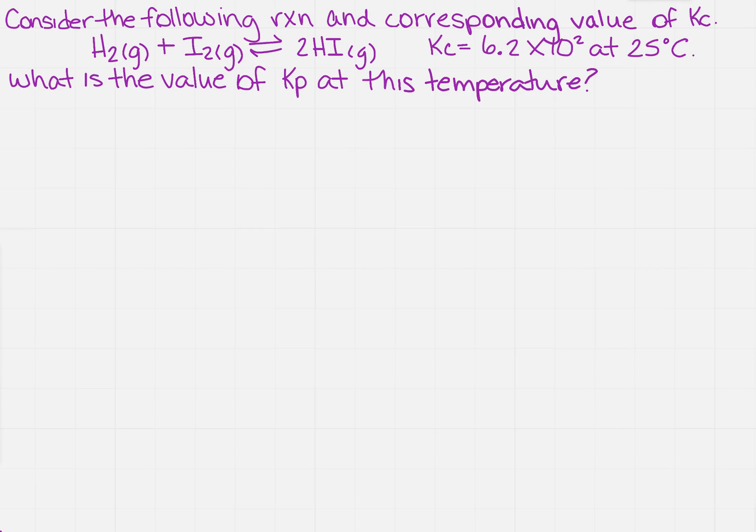We have the following reaction, and we're given the KC value, but we want to find the KP value. So remember, there's a formula to find KP from KC, and it's KP equals KC times RT, both of those raised to the delta n.